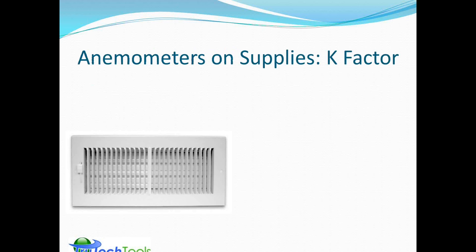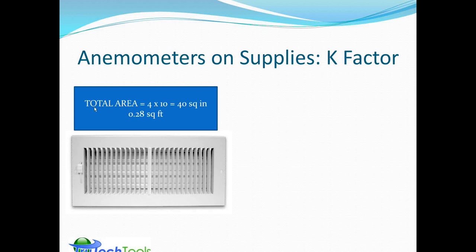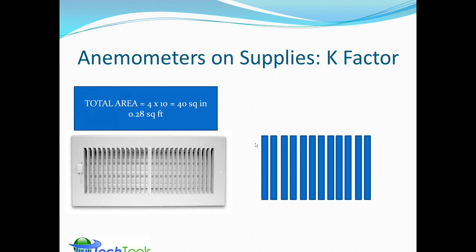When using an anemometer to measure volume flow at a supply, you have to account for the fact that you're not always measuring over a fully open area. You can calculate the total area of the duct, but the grill covering the duct will restrict how much air gets through. The total open area is only a portion of the total area — we call this a K factor or multiplier.